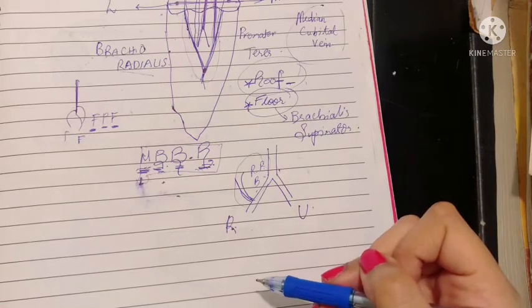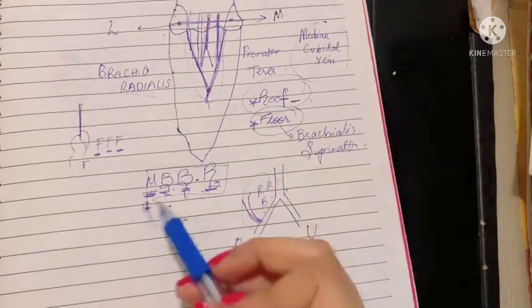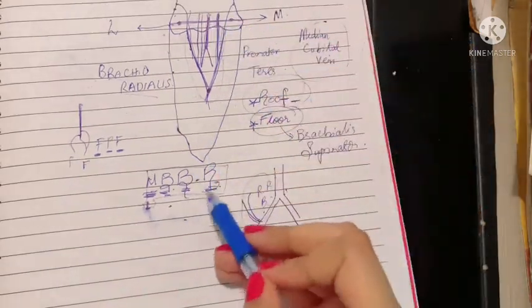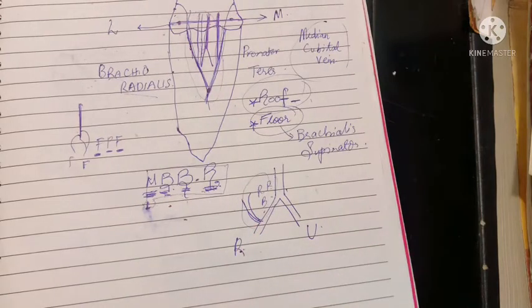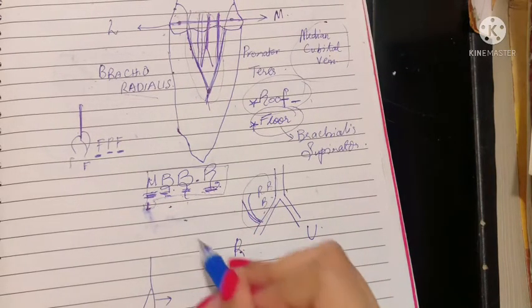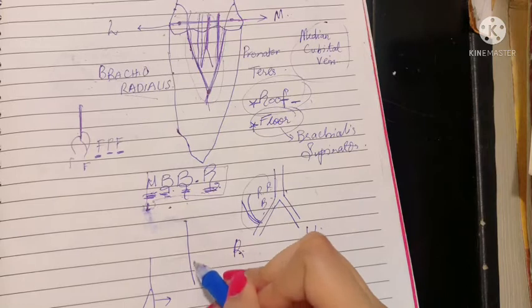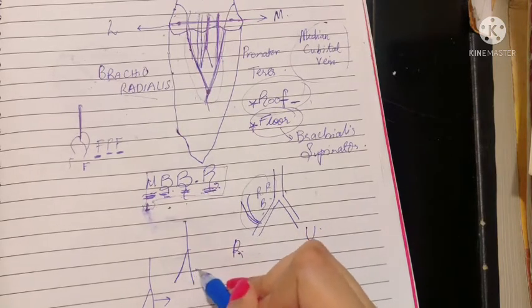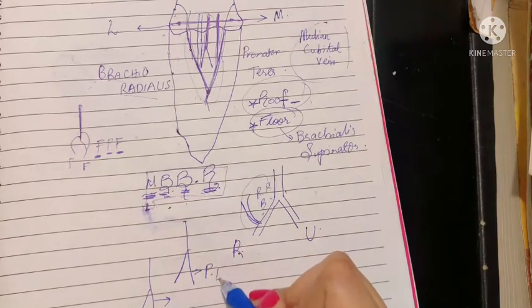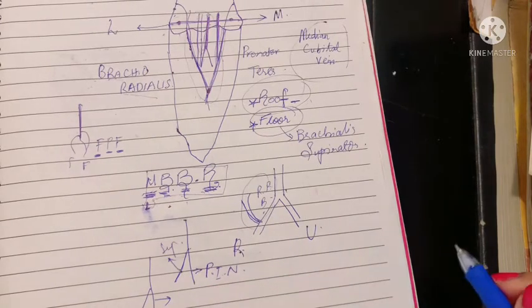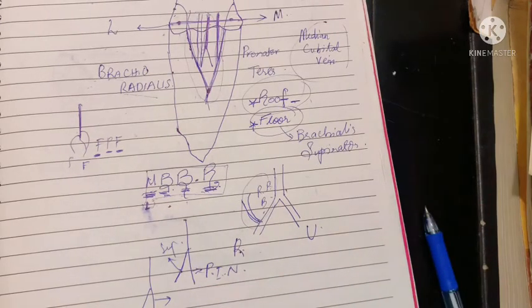Then there's the biceps tendon and the radial nerve. What special event is occurring to the radial nerve? It's dividing into its deep and superficial branches. The deep branch is called the posterior interosseous nerve and the superficial branch.